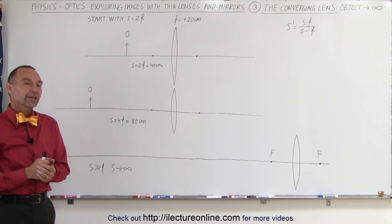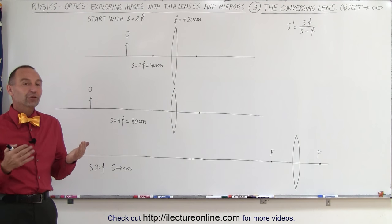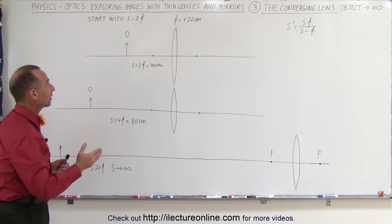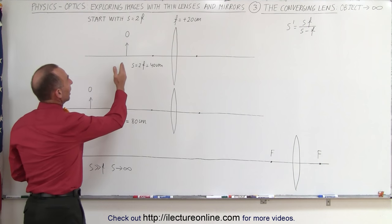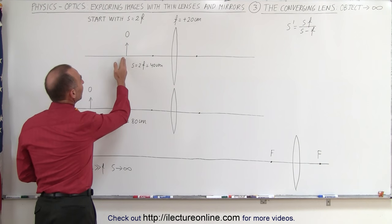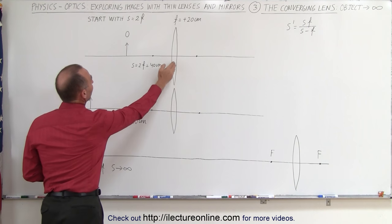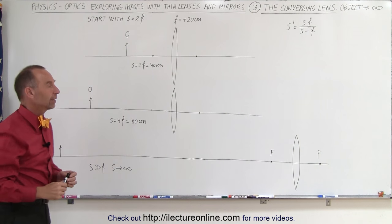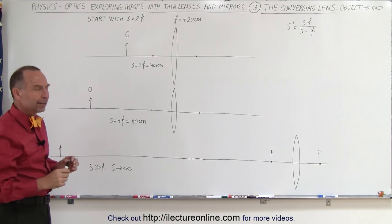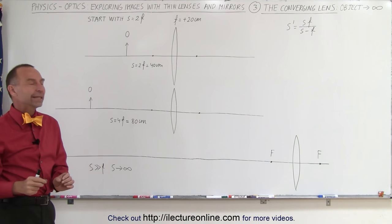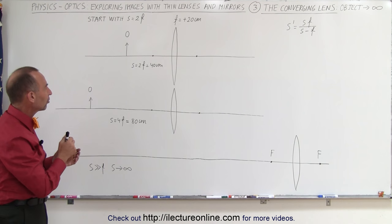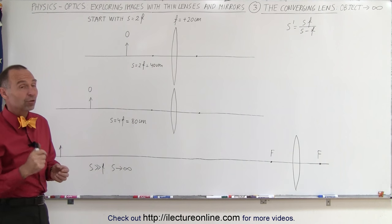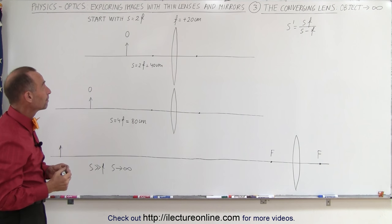Welcome to ElectronLine. Let's start with the converging lens, with the object placed at exactly twice the distance from the lens to the focal point — which is twice the focal length. That particular point is a special point with the converging lens, and you'll see in just a moment why.